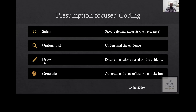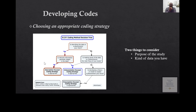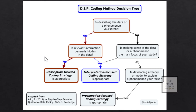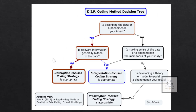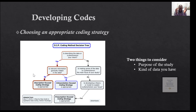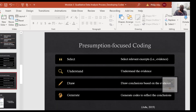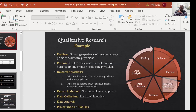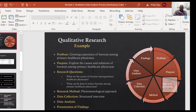Those are the three coding strategies. Now ask yourself: based on the data we're analyzing, which strategy should we use? There are two things to consider: first, the purpose of the study. The purpose is to explore the causes and solutions of burnout. Looking at the participant transcripts, you can see that the information is right there — it's not hidden. Participants were asked directly about causes and solutions.